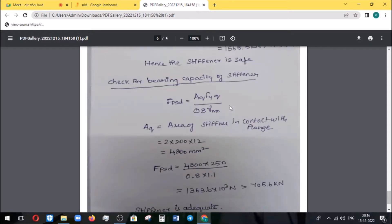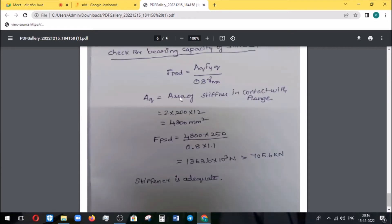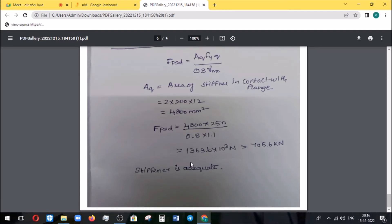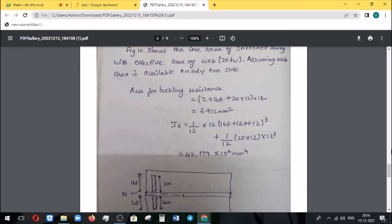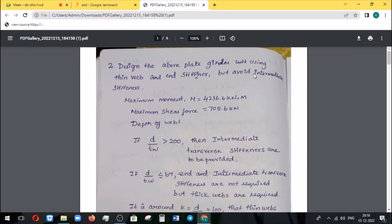If we check bearing, we check it out using the formula: aq × fyq divided by 0.8 gamma m naught. Aq is area of stiffener in contact with flange. That is 2 into 200 into 12. We are substituting all values and finding out whether it is below the shear force or above. It's above, so the section is adequate and stiffener is correct. This is the end bearing stiffness. We will also check the problem.